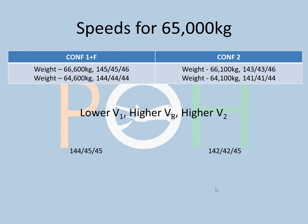For V-speeds the rule is: lower V1, higher VR, higher V2. Box speeds are noted: lower V1 is 144, higher VR is 145. The difference between V2s (144 and 146) is 2, so we split to 45 for Config 1+F. All speed differences are 2 — so we take mid-values: 142, 42, and 45. This mid-value approach applies only when the difference between configs is 1, where you cannot split.